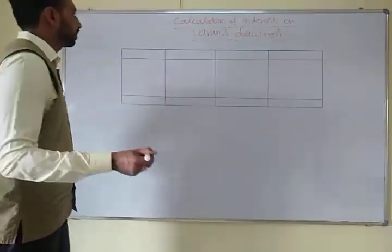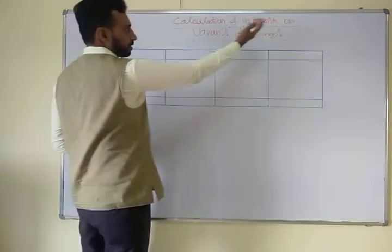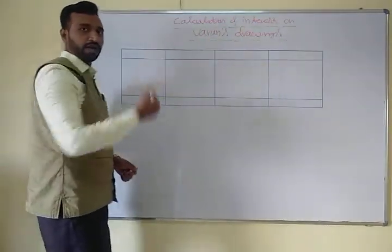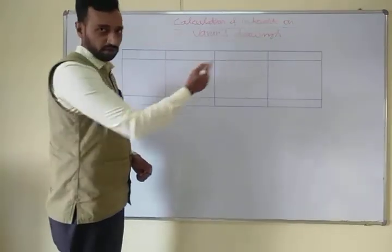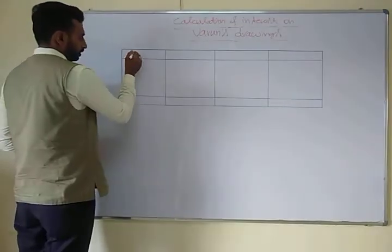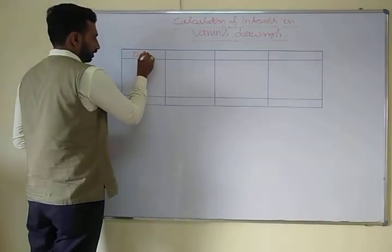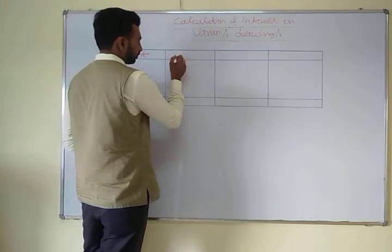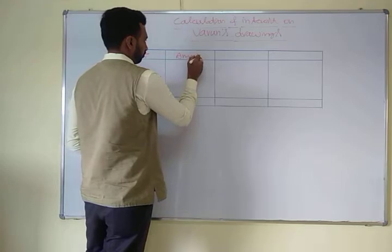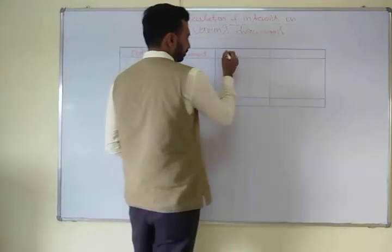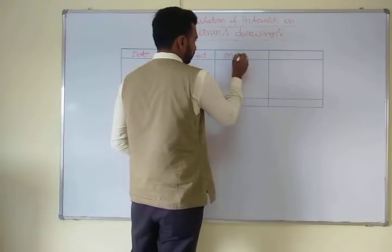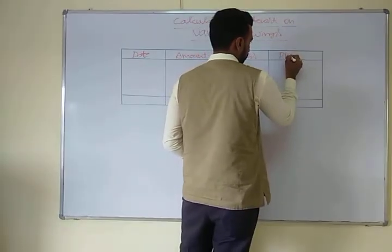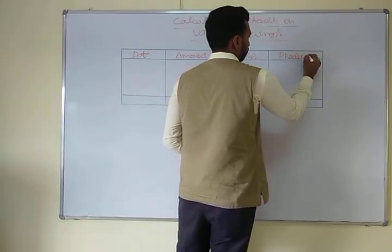Let us start the problem. We have to calculate the interest on Varun's drawings. We know about the analysis table. The columns we need are: Date, Amount, Months, and Product.